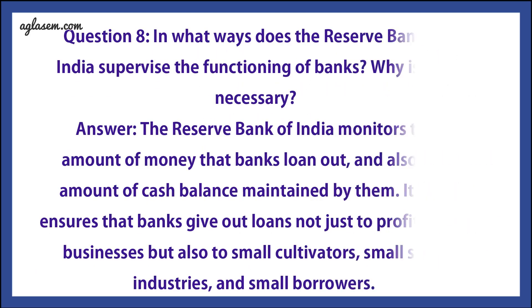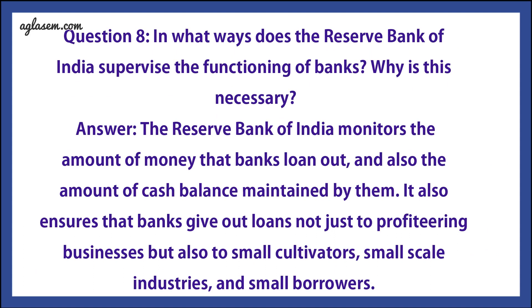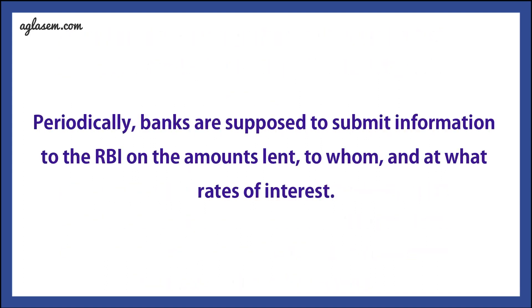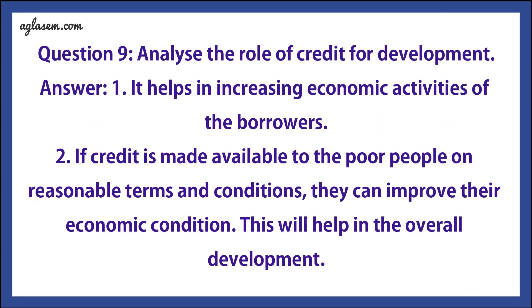Question 8: In what ways does the Reserve Bank of India supervise the functioning of banks? Why is it necessary? Answer: The Reserve Bank of India monitors the amount of money that banks loan out and also the amount of cash balance maintained by them. It also ensures that banks give out loans not just to profitable businesses but also to small cultivators, small-scale industries, and small borrowers. Periodically, banks are required to submit information to the RBI on the amount lent, to whom, and at what rate of interest.